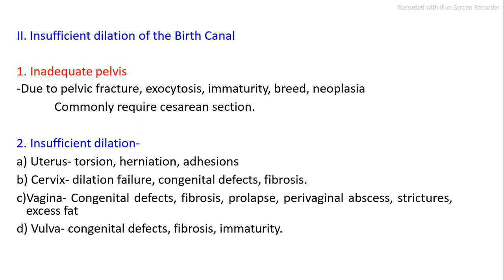Insufficient dilation of the birth canal: 1. Inadequate pelvis due to pelvic fracture, exostosis, immaturity, breed, or neoplasia — commonly requires cesarean section. 2. Insufficient dilation due to uterine torsion, herniation, or adhesions. 3. Cervix dilation failure from congenital defects or fibrosis. 4. Vaginal causes: congenital defects, fibrosis, prolapse, perivaginal abscess, strictures, excess fat. 5. Vulvar causes: congenital defects, fibrosis, immaturity.